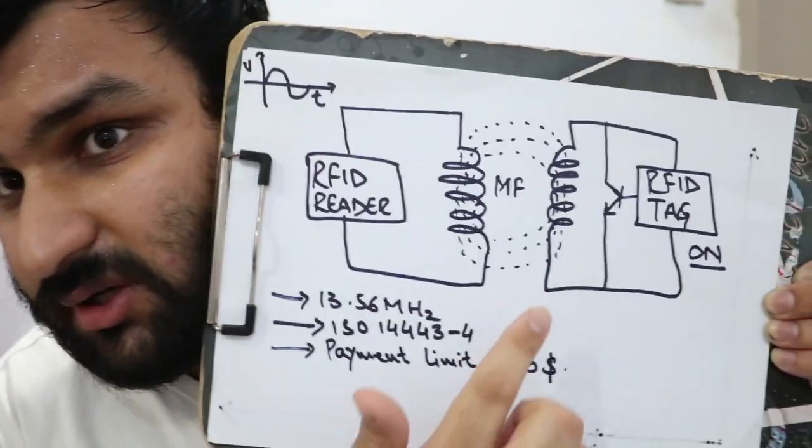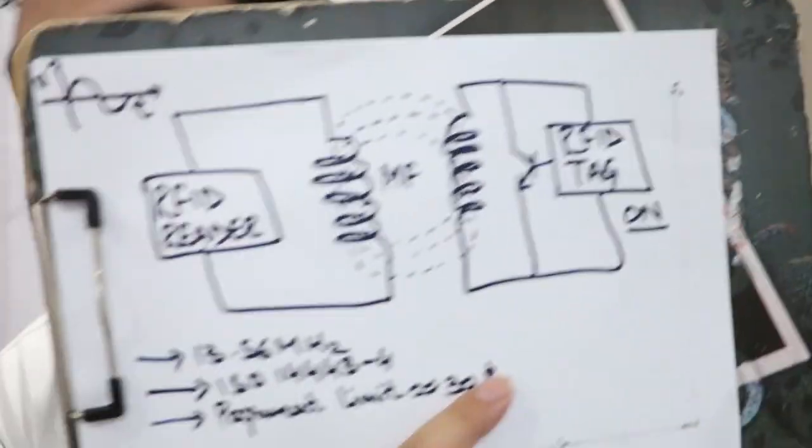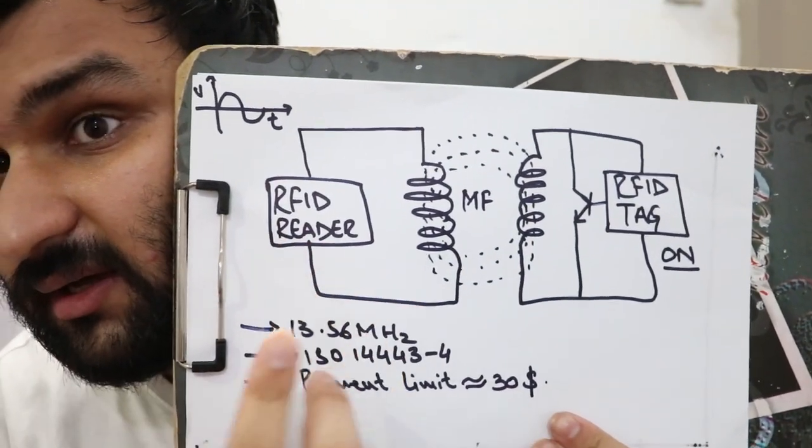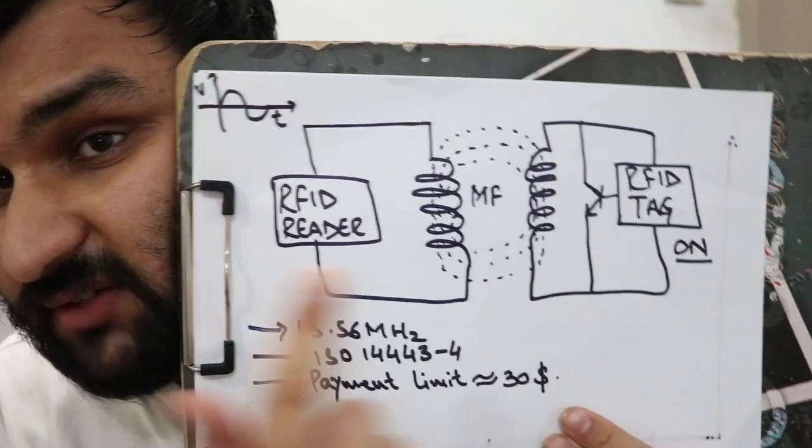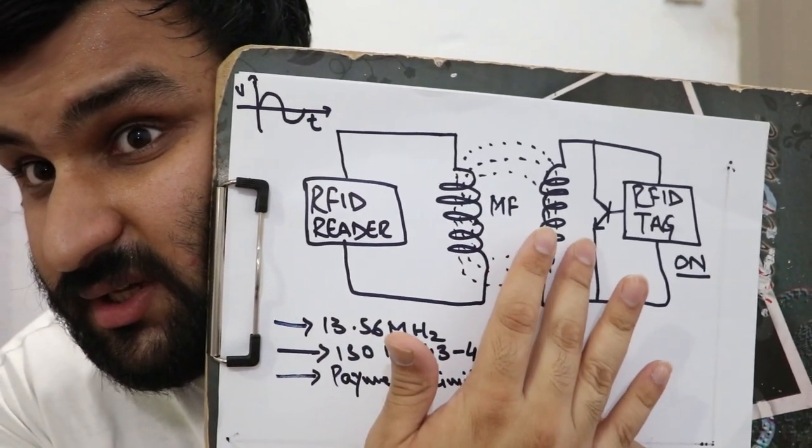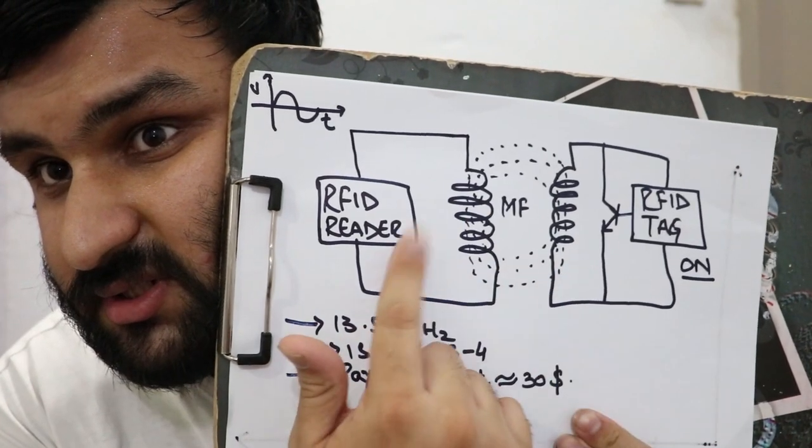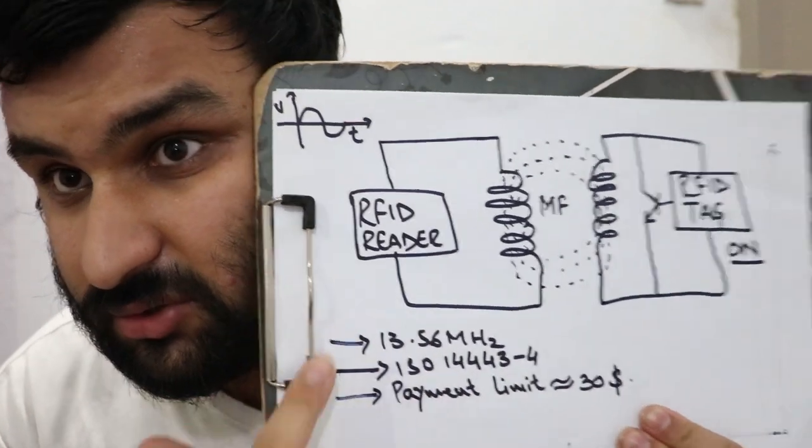Basically there are three types of tags: active tag, passive tag, and semi-passive tag. An active tag has its own battery and it has a better range. The passive tag doesn't have much range because it uses the RFID reader's power to power itself.